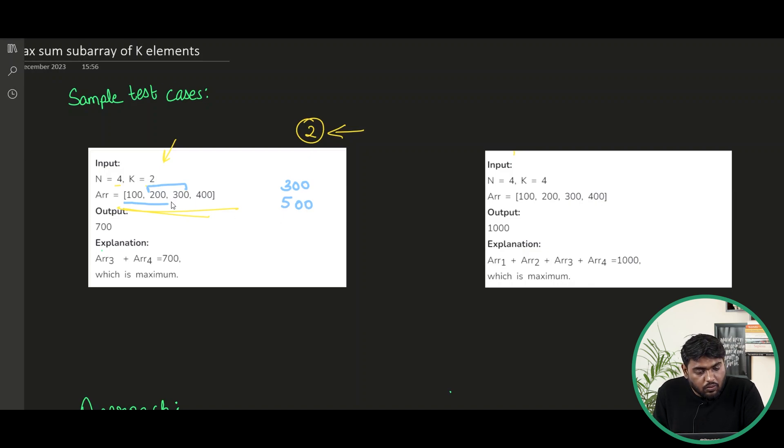Eventually there will be one more subarray of size two which is 300 and 400. The sum will be 700. What is greatest of them all? 700. Thus 700 is the answer. Simple.